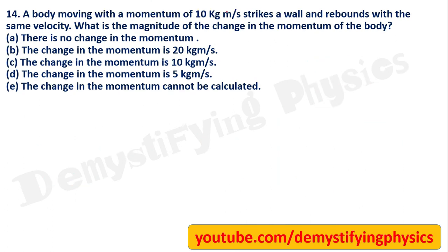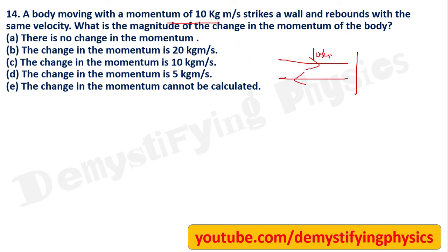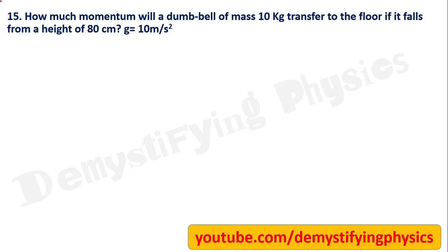The next question is the same concept with different numbers — an object with initial momentum 10 kg·m/s rebounds with the same speed in the opposite direction. Applying the same reasoning, the magnitude of change in momentum is 20 kg·m/s.